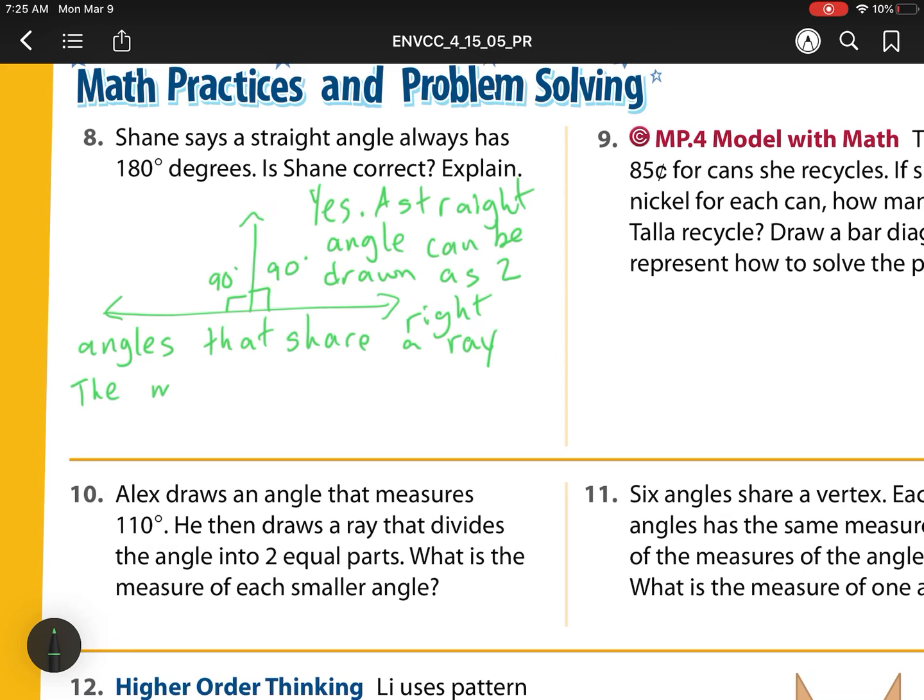A straight angle can be drawn as two right angles that share a ray. So the measure of each right angle is what? We know it's 90 degrees because it's that corner piece of paper. And then what do I know? I know that 90 plus 90 equals 180 degrees.